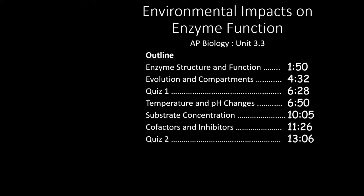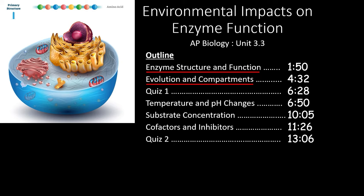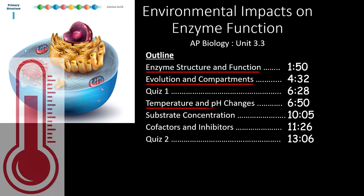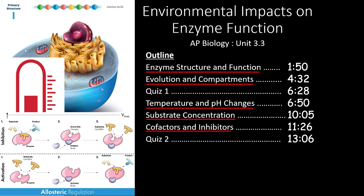We'll start by reviewing how enzyme structure is related to function. Then we'll see why different enzymes have evolved to require different environments and how compartmentalization plays a role. After the first quiz, we'll look at how temperature and pH changes can affect enzyme function, how the substrate concentration can speed up or slow down an enzyme, and how cofactors and inhibitor molecules can either start or stop an enzyme's function. If you only need to review one of these topics, feel free to skip forward to the times outlined here.